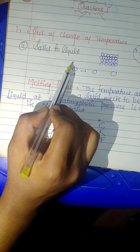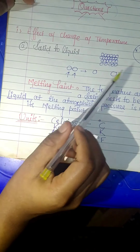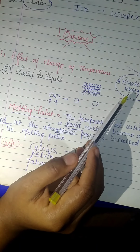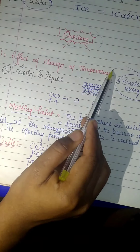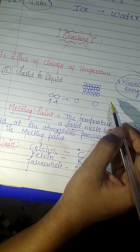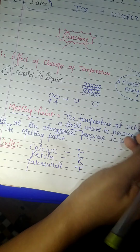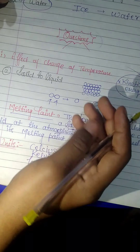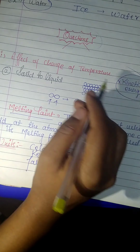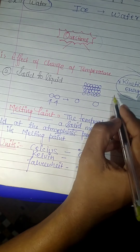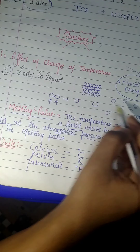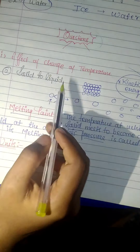When solid molecules are closely packed and we change the temperature, if we talk about solid water (ice), its melting point is 0 degree Celsius. When we give heat, the molecules gain more energy and move away from each other. When the molecules become more spread out, the solid becomes liquid form. So this is how temperature changes a solid into a liquid.